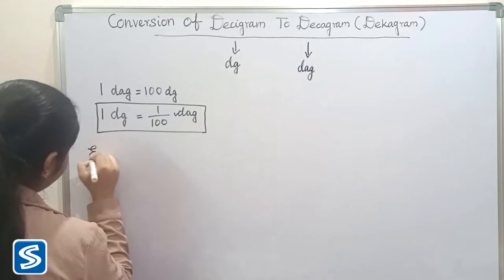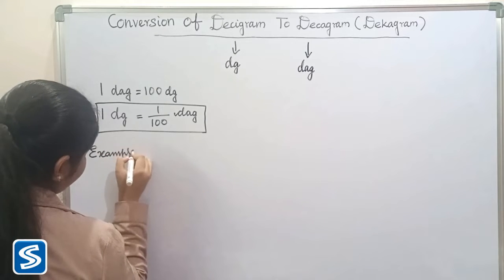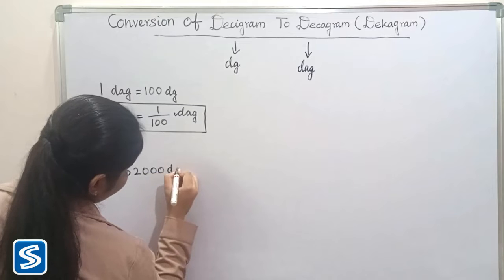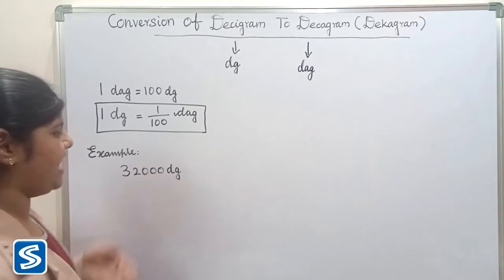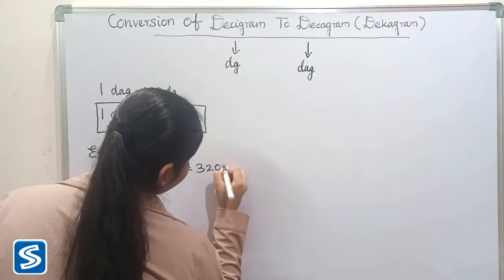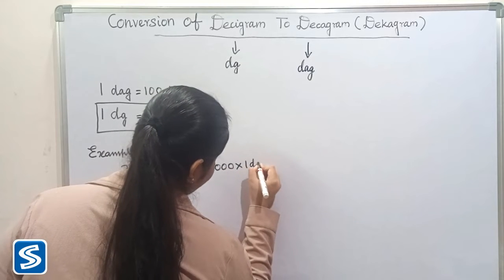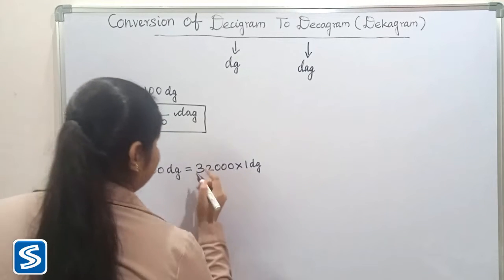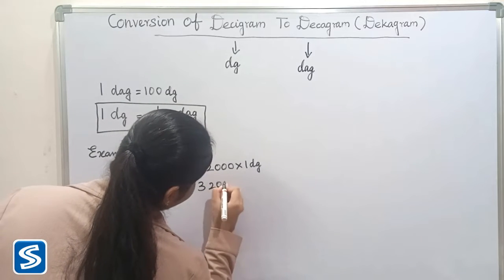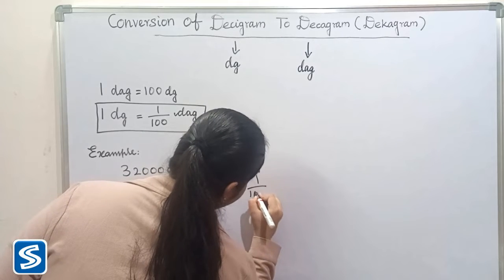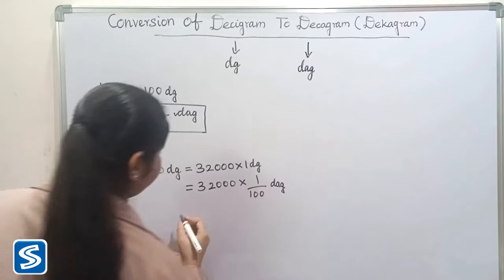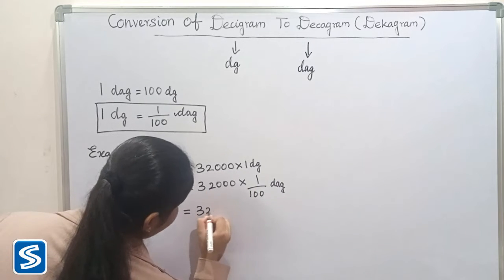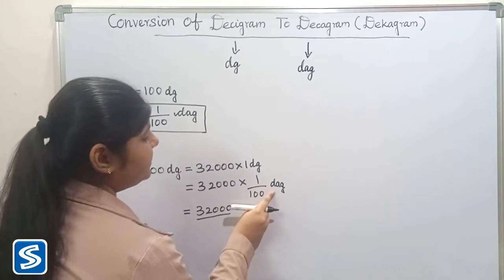For example, we can take 32,000 desigrams. 32,000 desigrams can be written as 32,000 multiplied by 1 desigram. So now we have to substitute 1 by 100 decagrams in the place of 1 desigram. So 32,000 multiplied by 1 by 100 decagrams. 32,000 multiplied by 1 will be 32,000, so 32,000 divided by 100 decagrams.